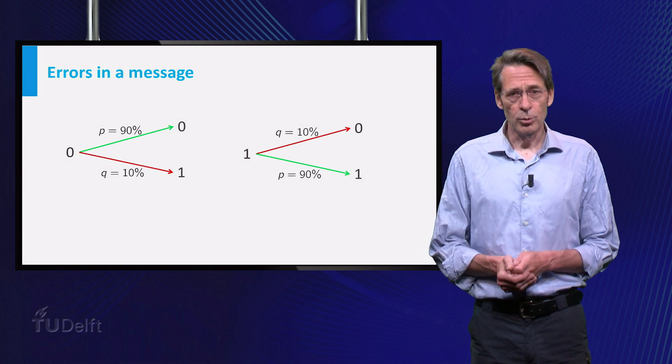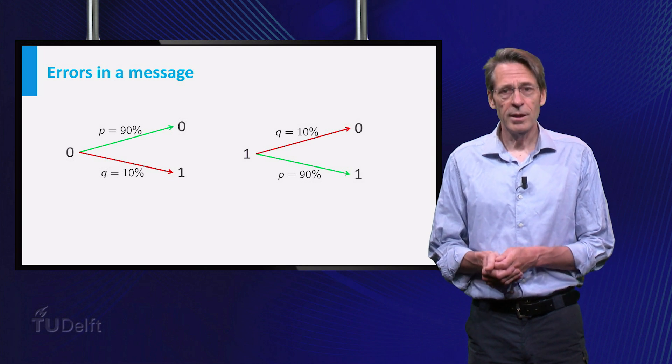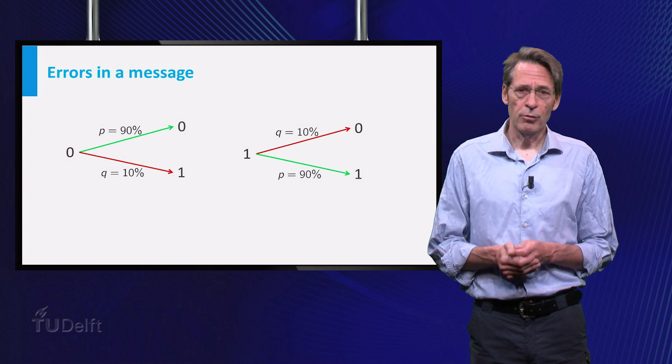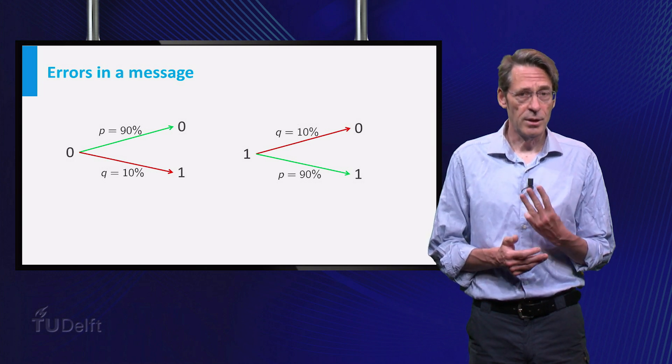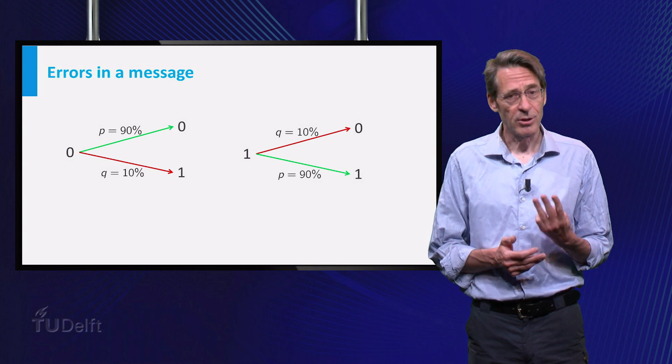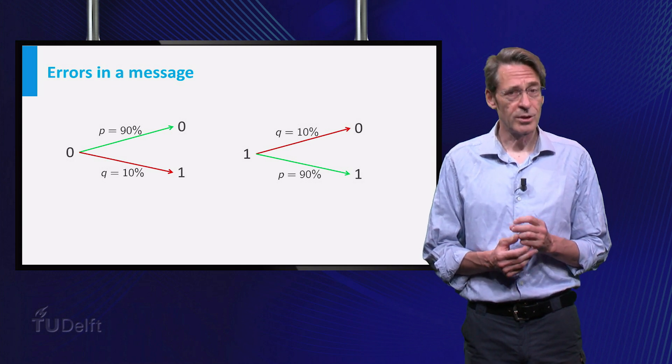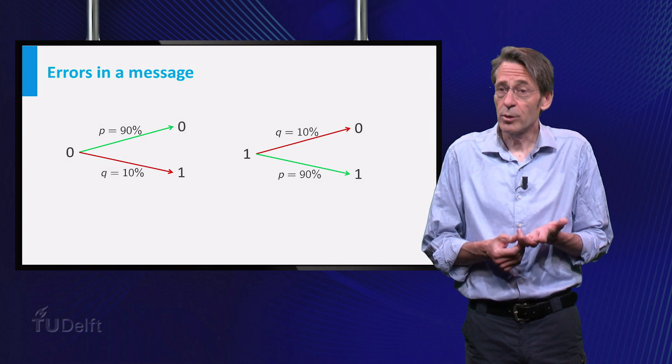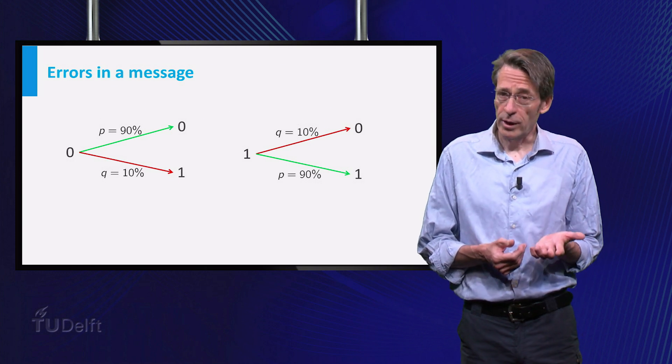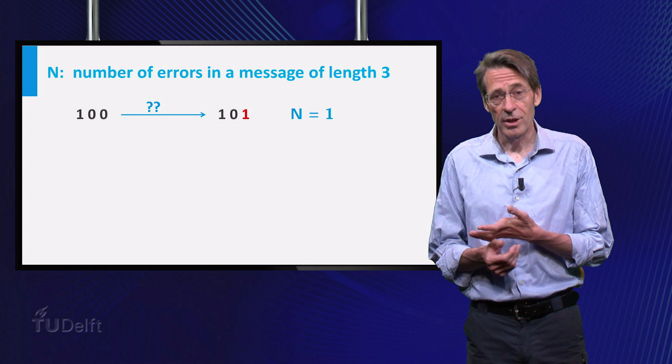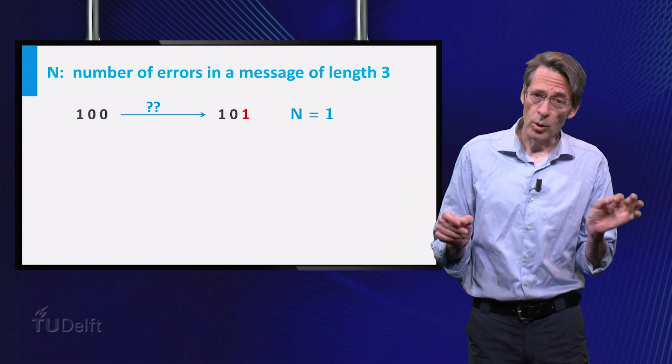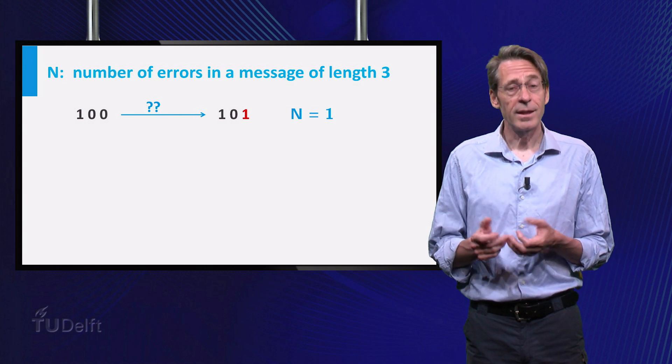Furthermore, it is assumed that the errors occur independently of each other. We are interested in the number of errors in a message of 3 bits, and we denote this random number by capital N. Note that N is a random variable, as we don't know beforehand the value it will take on. For instance, if the message sent is 1 0 0, and 1 0 1 is received, N gets the value 1.